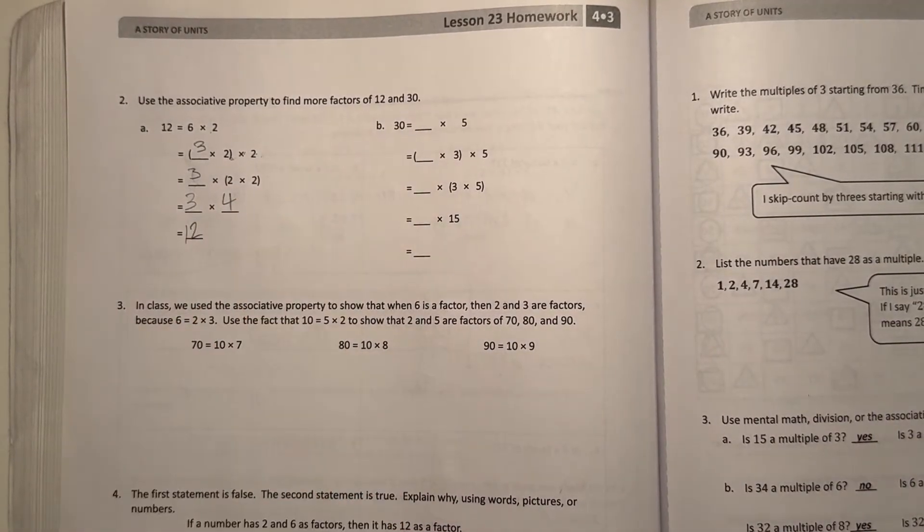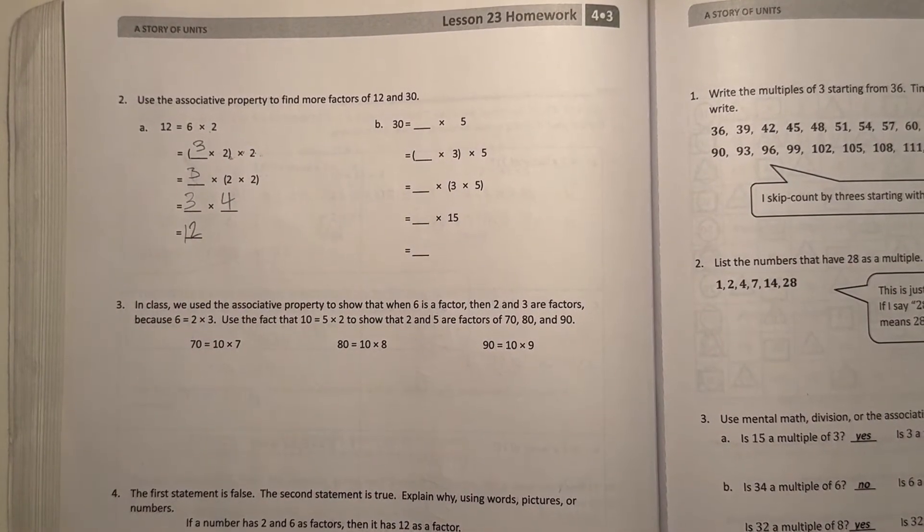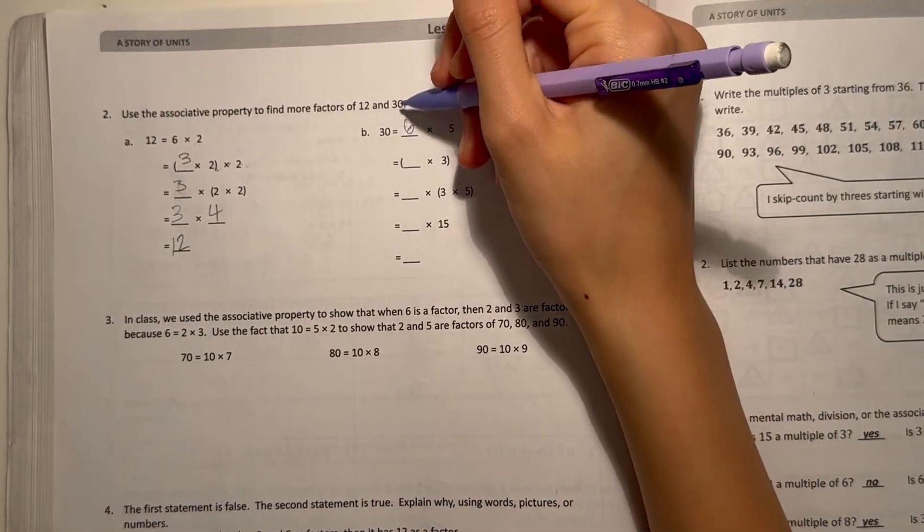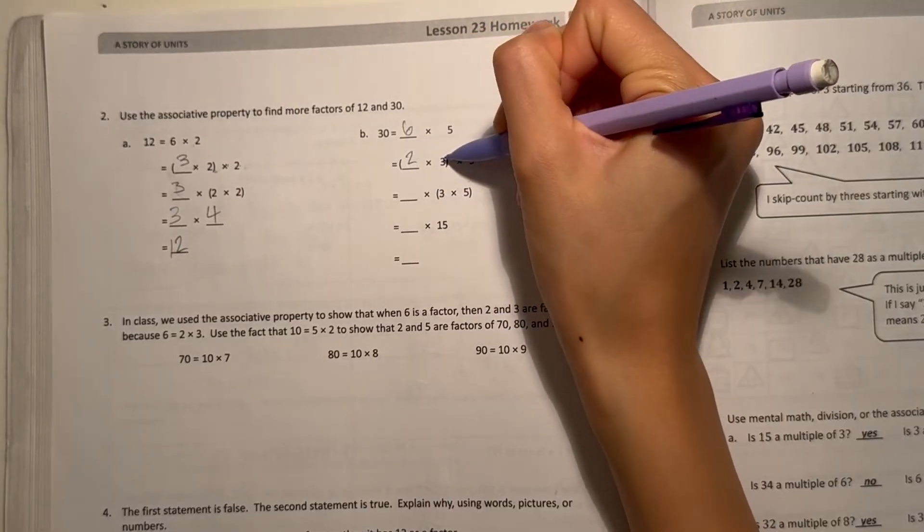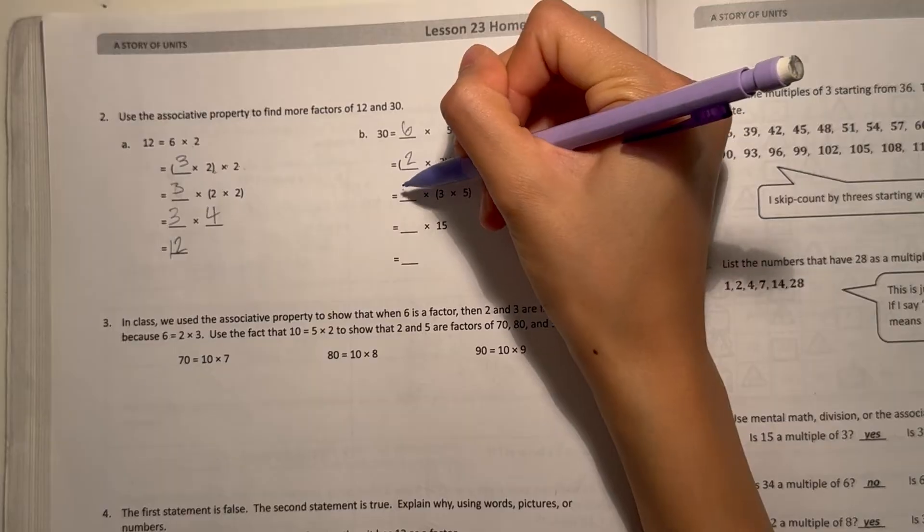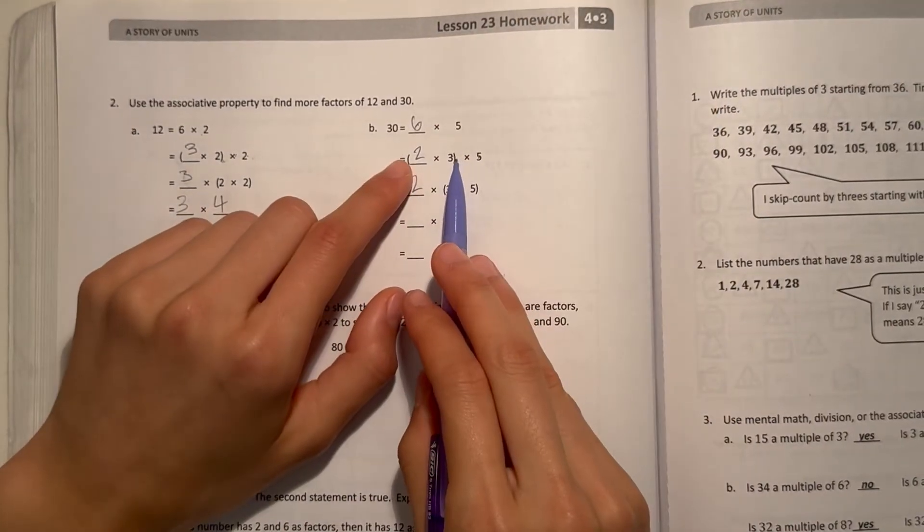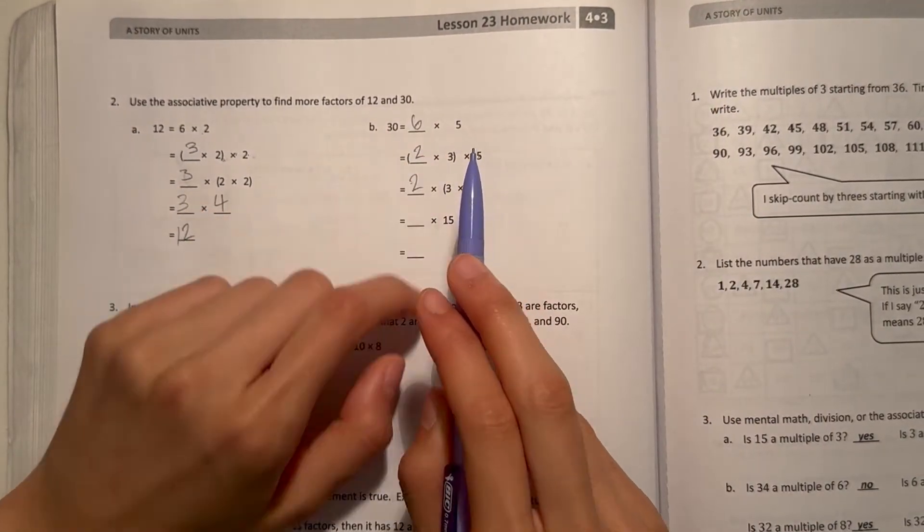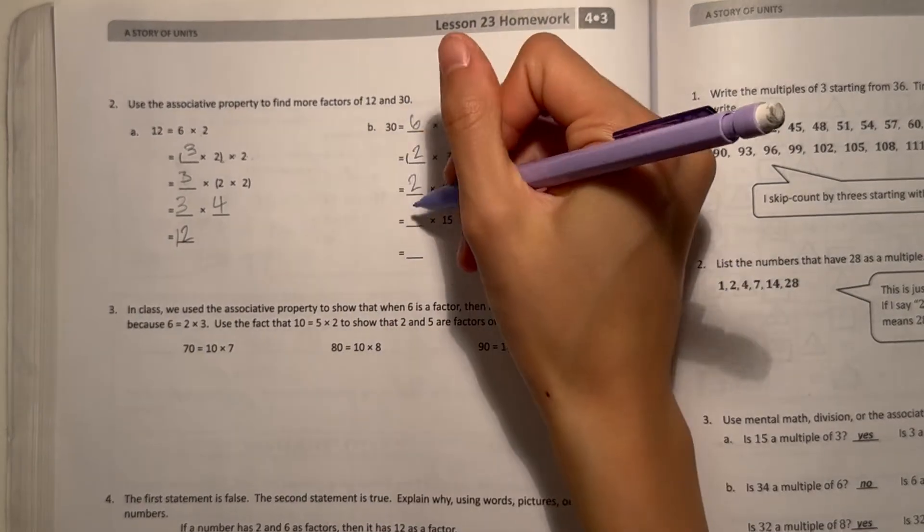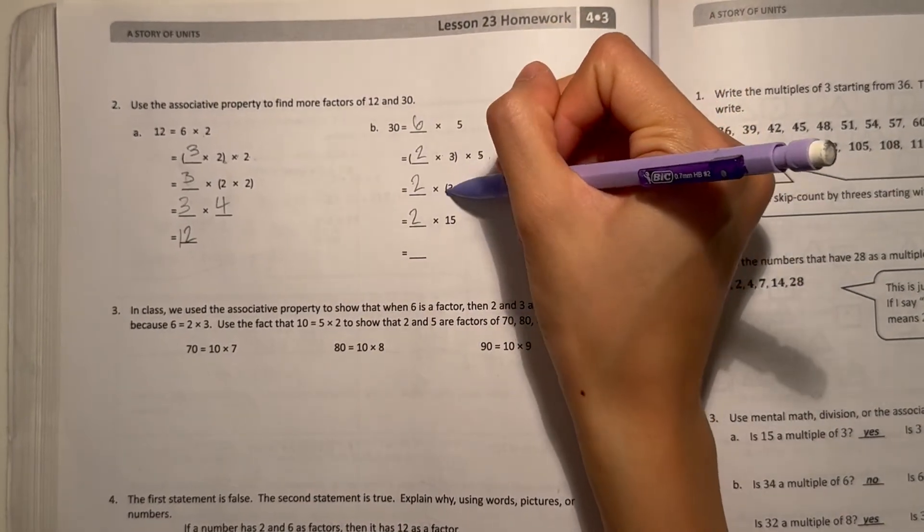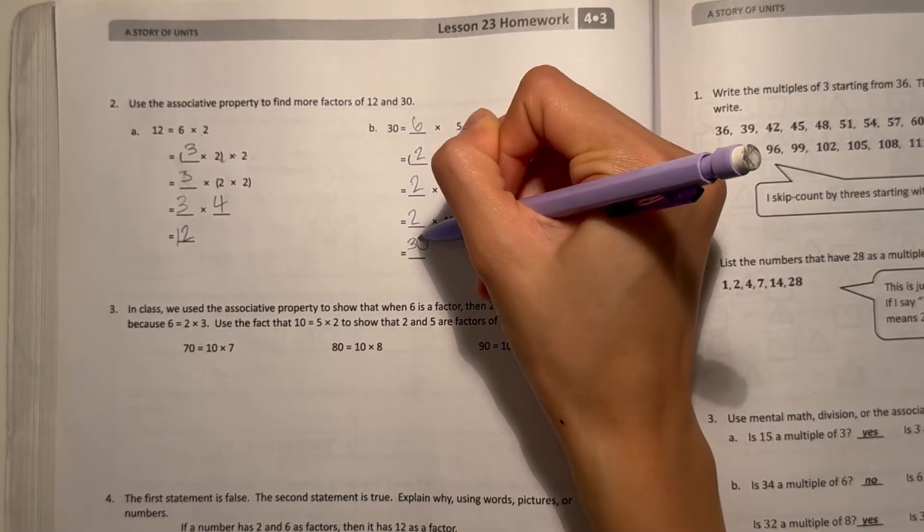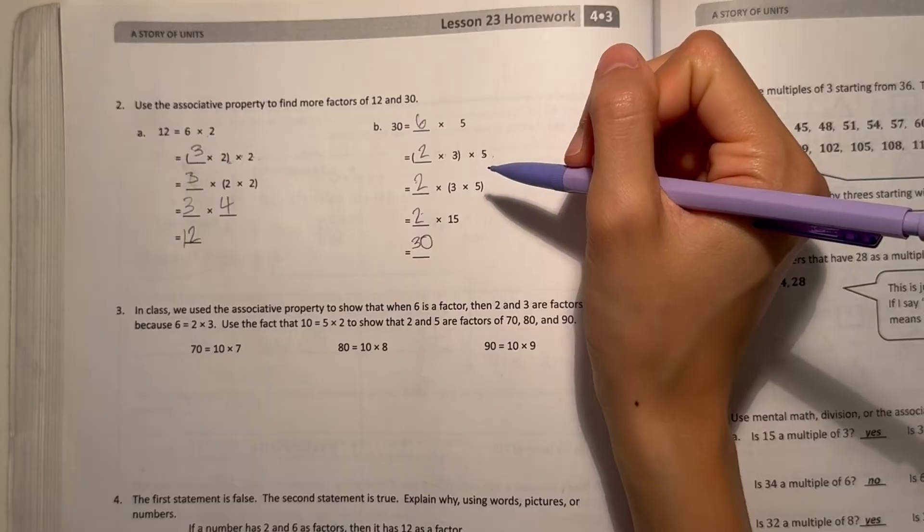B, 30 equals blank times 5. We know 6 times 5 is 30. Now break apart the 6. It's 2 times 3 is 6, and then times 5 is 30. Now, if we think of it, we're moving the parentheses over to the next numbers. So it's 2 times 3 times 5, which is 2 times 15, because 3 times 5 is 15. And 2 times 15 is 30. So that means 2 and 15 are also factors.